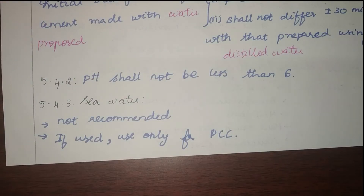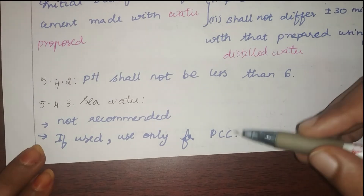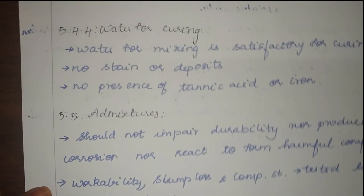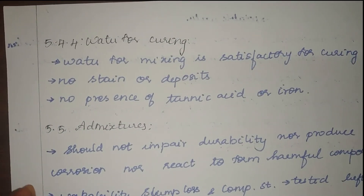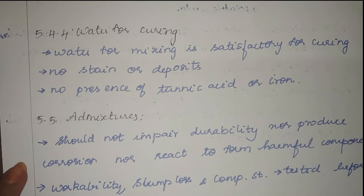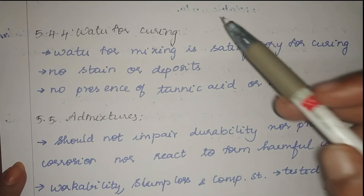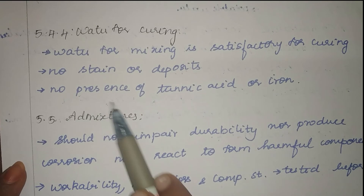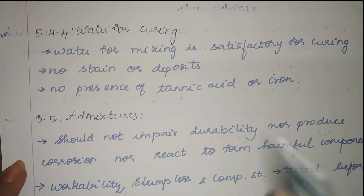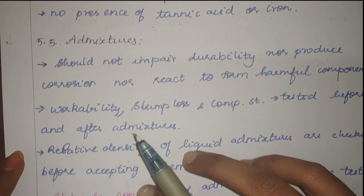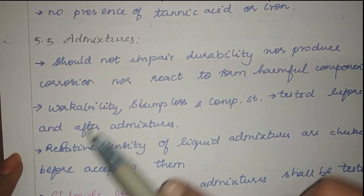Seawater is generally not recommended, but under certain circumstances when there is no other way, it can be used only for PCC — plain cement concreting. For curing water: water used for mixing is satisfactory for curing, but it should not produce any stains or deposits, and there should be no presence of tannic acid or iron.